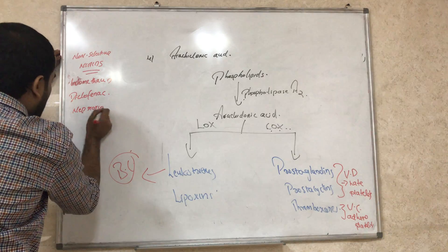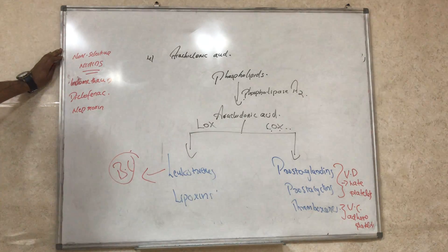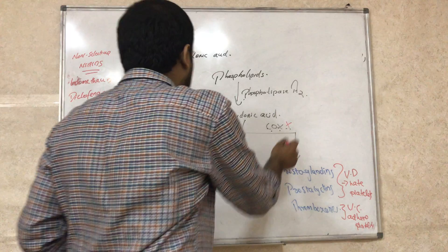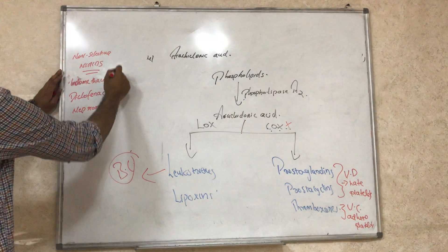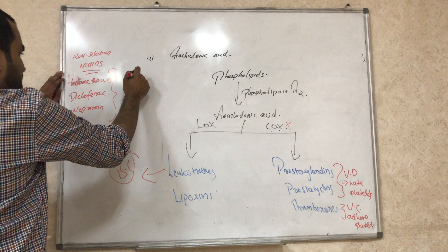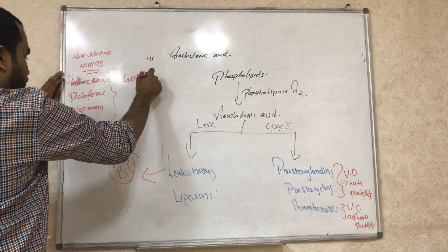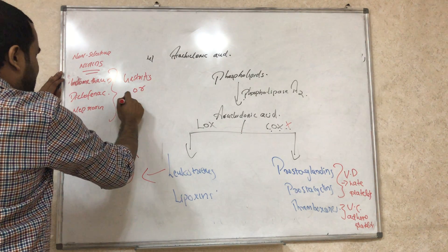So this will block the normal cyclooxygenase pathway. Normally we need this, so if you block this, they will cause side effects: gastric ulcer or gastritis, and nephrotoxicity.